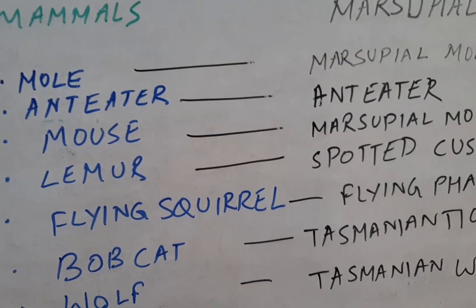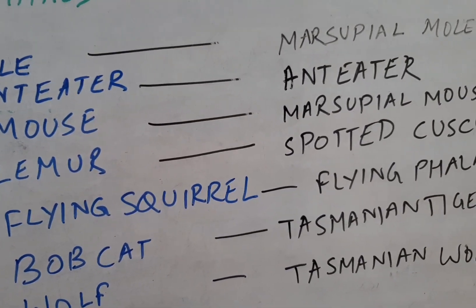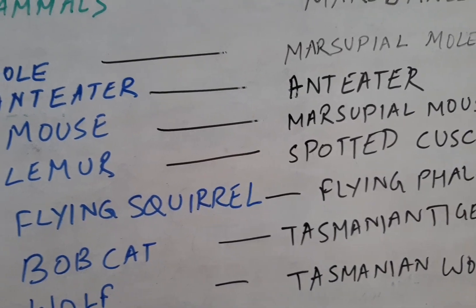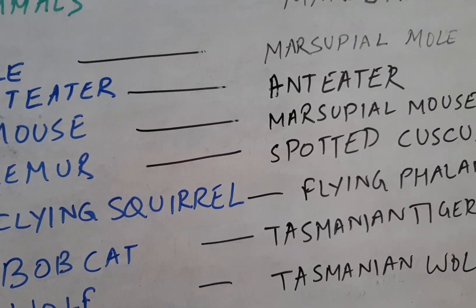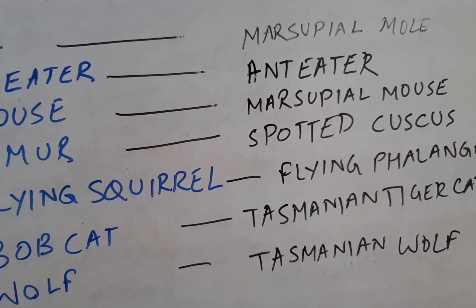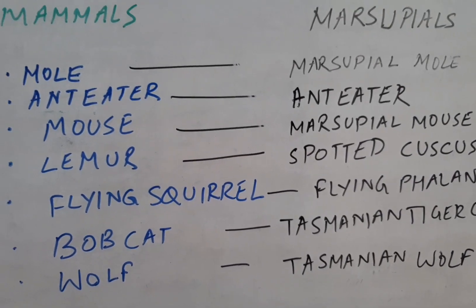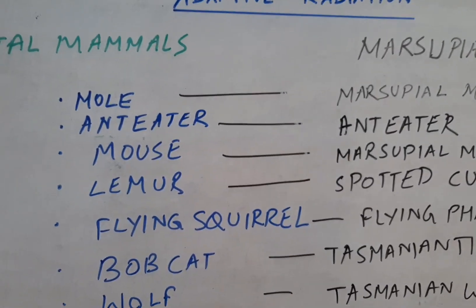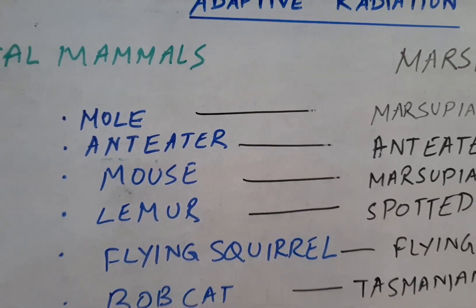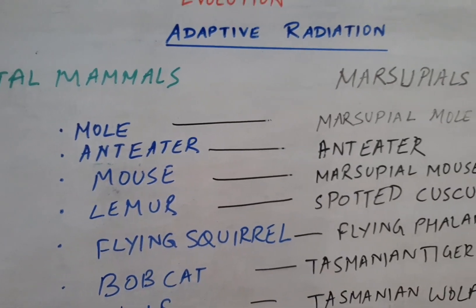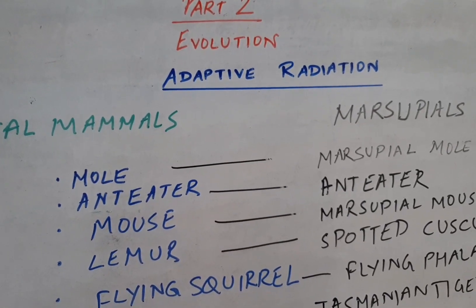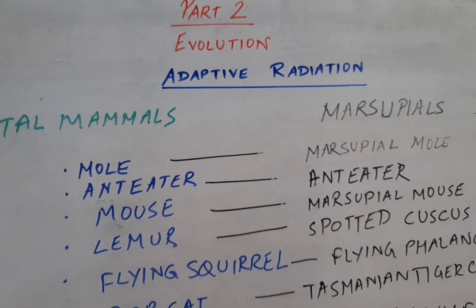The bobcat resembles the Tasmanian tiger cat, and the Tasmanian wolf resembles the placental wolf — but it should be noted that the Tasmanian tiger cat and the Tasmanian wolf are now extinct. This is about convergent evolution with the example of adaptive radiation, as generally put forward by Charles Darwin.